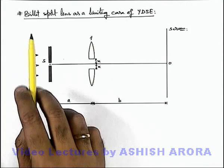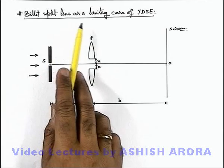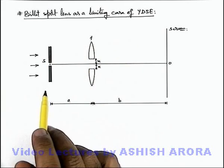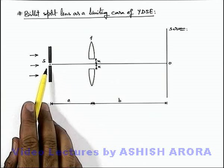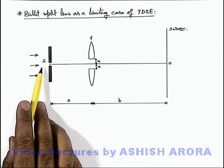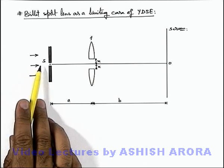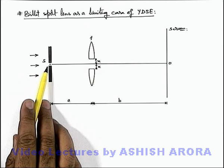Let us now study the concept of Billet split lens as a limiting case of Young's double slit experiment. In this setup, we are given a slit plane on which light is incident from the rear side and it illuminates the slit.